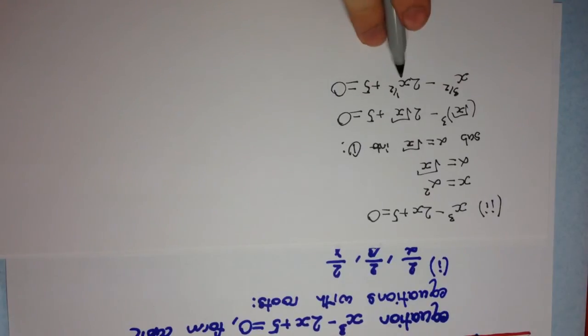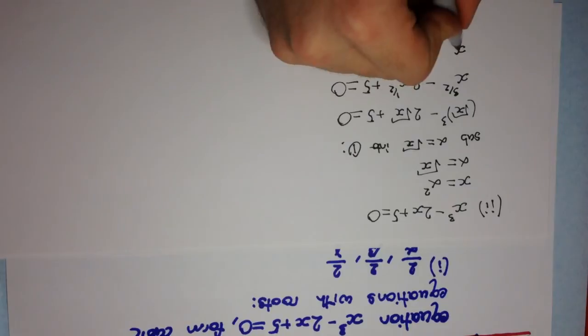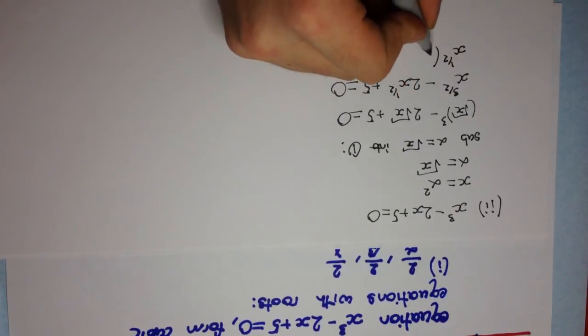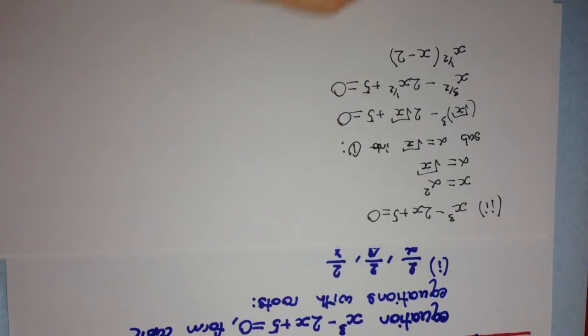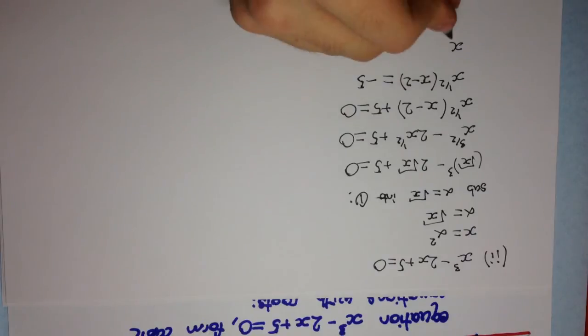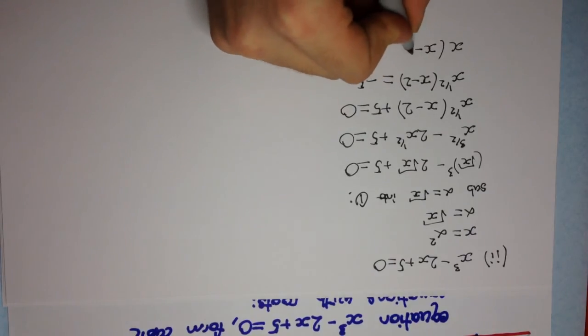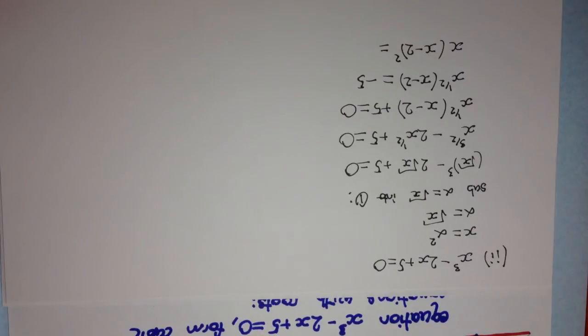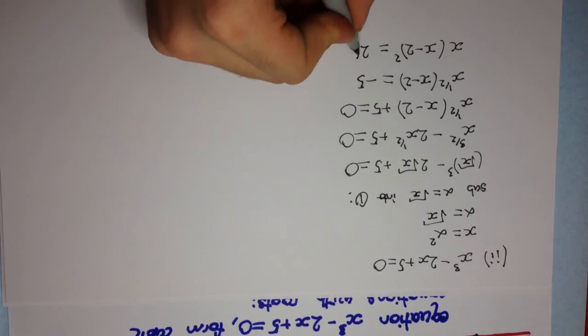Now, I can factor out an x to the half with these two terms, and get x to the half in brackets. Now, we'll be left with an x here, minus and just a 2 will be left over here, plus 5 is equal to 0. Now, if I move the plus 5 to the other side, I'll get minus 5, and now I can square both sides to get rid of this radical here. So, once I square this, this will become x to the power 1, which we just write x, times x minus 2 squared equals minus 5 squared. Well, that's just 25. That's positive 25.